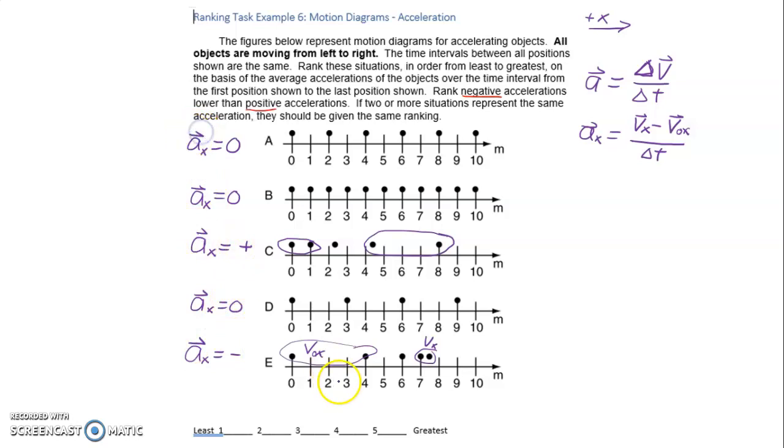And now we're ready to rank them. E is going to be the least and then we have A, B, and D all together followed by C.